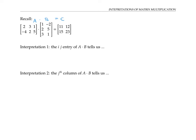In general, the IJ entry of A times B — that is, the entry of A times B in row I and column J — we get this by taking the product of row I in matrix A and column J in matrix B. To take the product of a row vector and a column vector, we multiply the corresponding entries and add them up. Sometimes this is called a dot product.